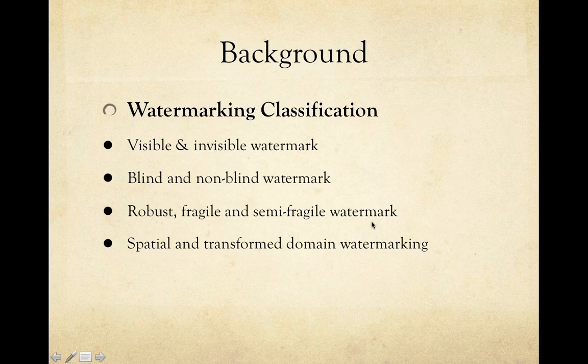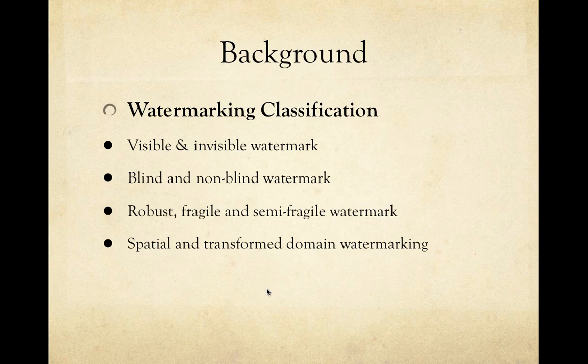The robust/fragile classification is based on the robustness level of the watermark technique. The last classification is spatial and transformed domain watermarking. Spatial domain watermarking embeds the watermark into the spatial domain, whereas transformed domain watermarking operates in transformed domains such as the frequency domain.